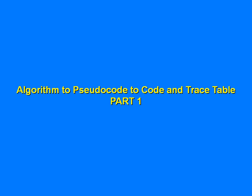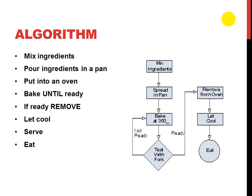An algorithm is a step-by-step list of instructions. To bake a cake, we can express it as step-by-step typed instructions or as a flowchart: mix ingredients, pour into pan, put it into the oven, bake until ready, if ready remove, let cool, serve and eat. The great thing about a flowchart is that it can show decision elements — for example, we don't know if it's ready, so we test with a fork.